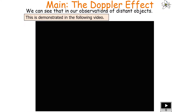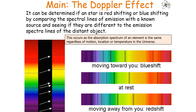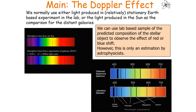It can be determined whether a star is redshifting or blueshifting by comparing the spectral lines of emission with a known source and seeing if they differ from the emission spectral lines of the distant object. The absorption spectra of an element is the same regardless of motion, location, or temperature in the universe. Normally we use light produced in a stationary Earth-based lab experiment, or light produced by the Sun, as a comparison for distant galaxies. Lab-based samples of the projected composition of stellar objects can be used to observe redshift or blueshift, though this is only an estimation.